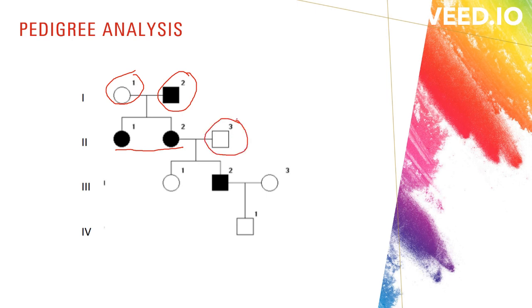After their marriage, they have two offspring, 3-1 and 3-2, but they have one affected male. 3-2 is the affected male, and this affected male marries with an unaffected female from the outside.